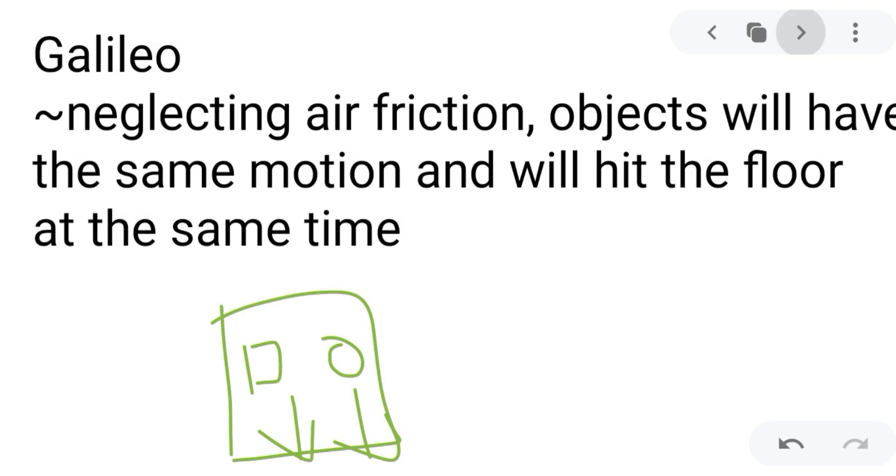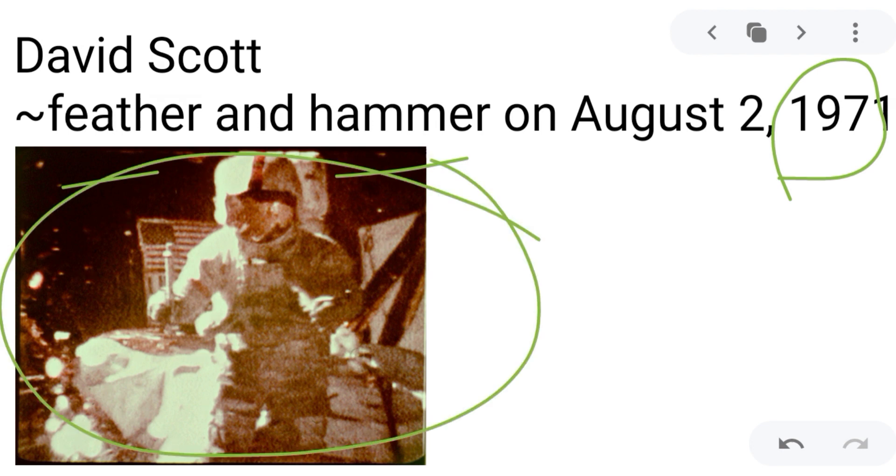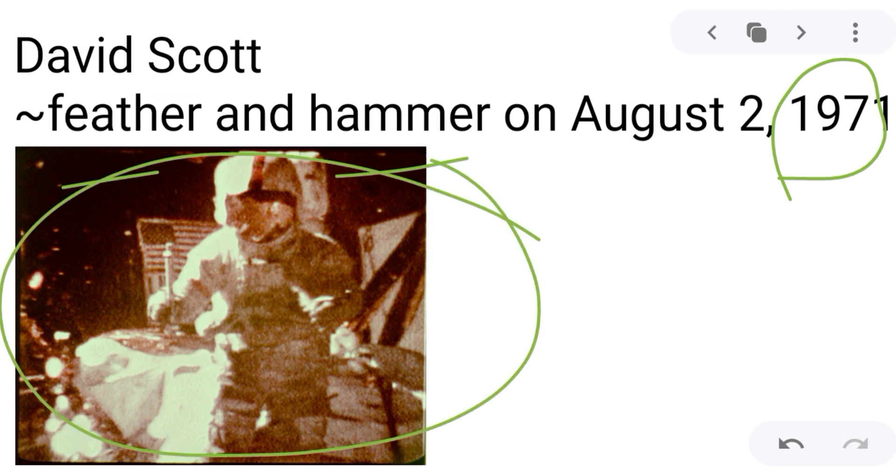This experiment was proven by David Scott, wherein it is a NASA experiment. In 1971, on his spacecraft, he dropped a feather and a hammer and the observation goes that both of the objects fell at the same time, at the same rate. So just like this experiment here on this video.